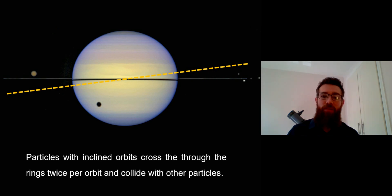But also if a particle is inclined, so that means that it's orbiting slightly inclined to the rest of the ring, what's going to happen is it's going to pass through that ring twice every orbit. And if it does that it will likely collide with other particles, and again it will basically dampen that vertical movement as well.